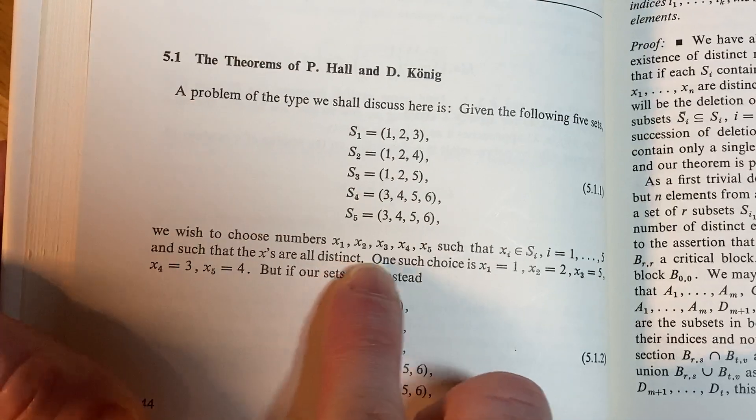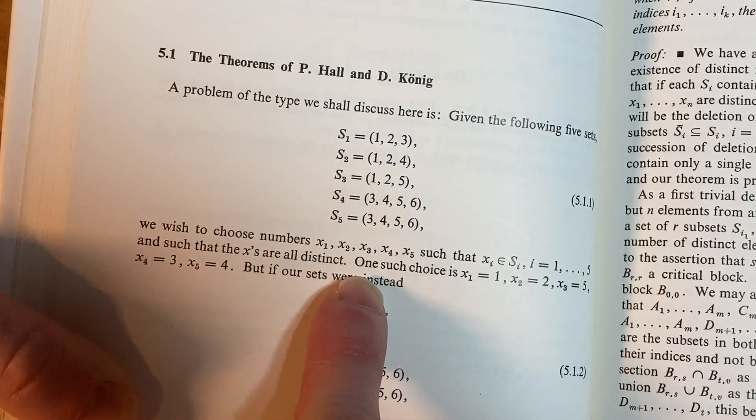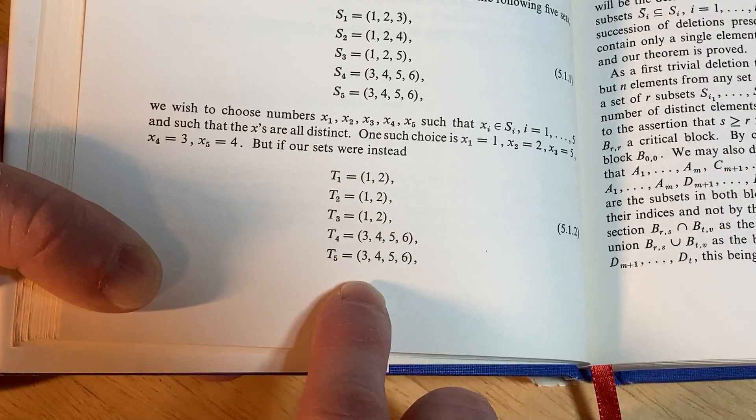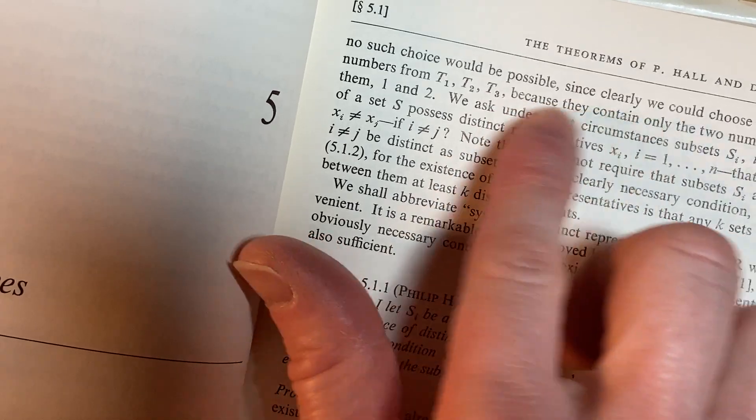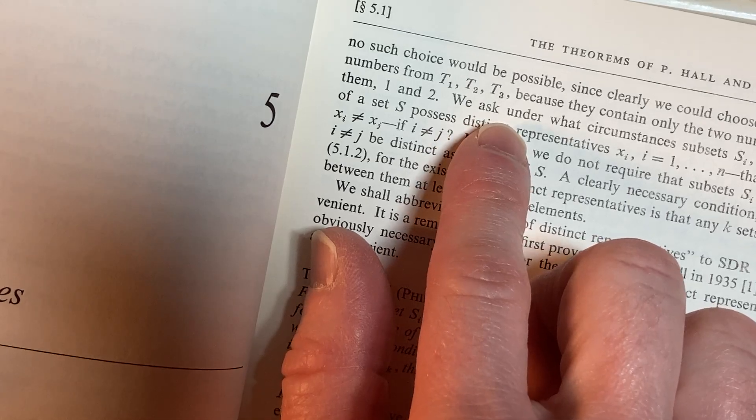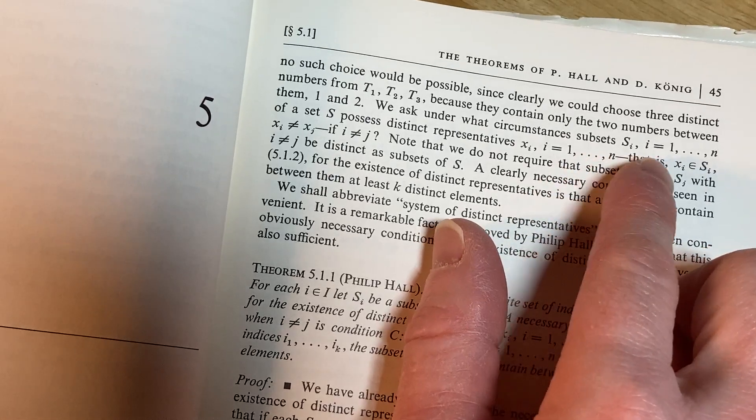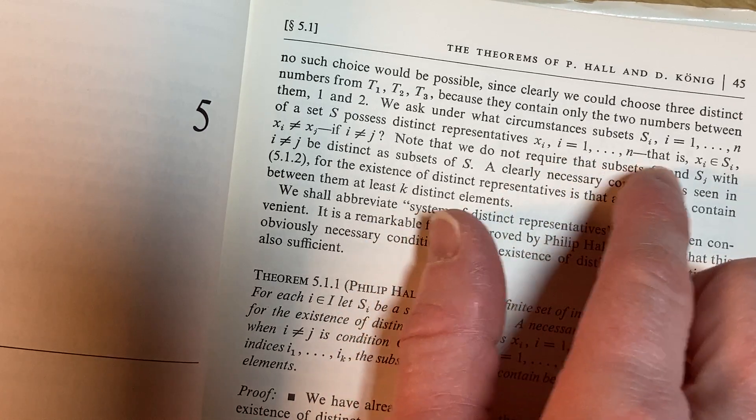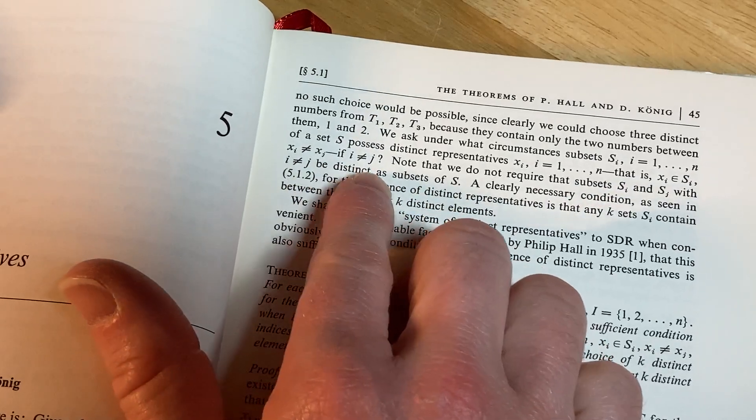We wish to choose numbers x₁ through x₅ such that xᵢ is in sᵢ from 1 to 5 and such that the x's are all distinct. I see one such choice is... but if our sets were instead, so if you change the sets, no such choice would be possible, since clearly we could not choose three distinct numbers from T₁, T₂, T₃, because they contain only the two numbers between them, 1 and 2.